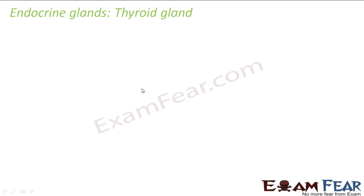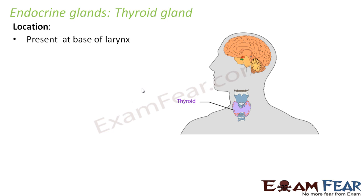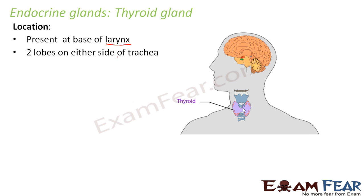Let us talk about the thyroid gland, which is located around the neck region — specifically at the base of the larynx, which is the voice box. The larynx contains vocal cords that help us speak. The thyroid gland is located just below the larynx, and here you can see the purple colored structure — that is the thyroid. It has two lobes, one on each side of the trachea, which is the windpipe.